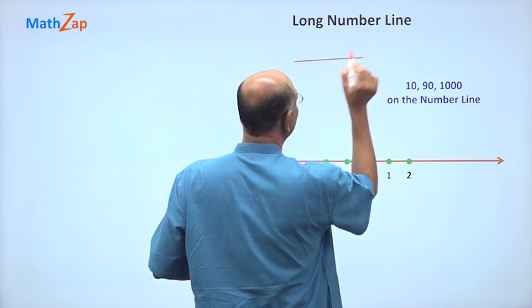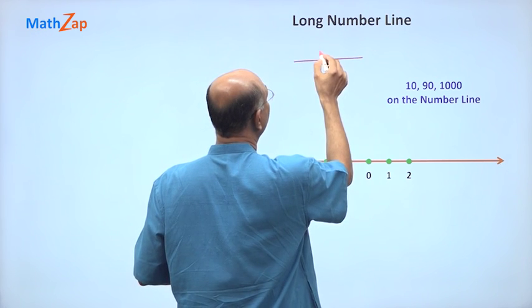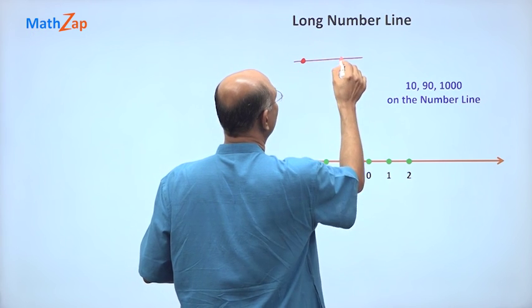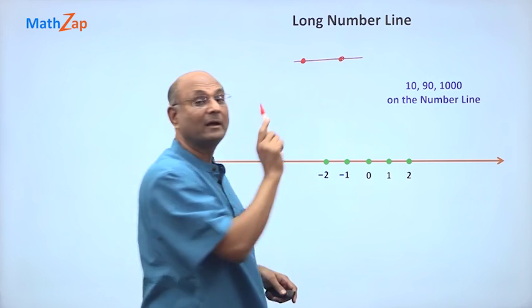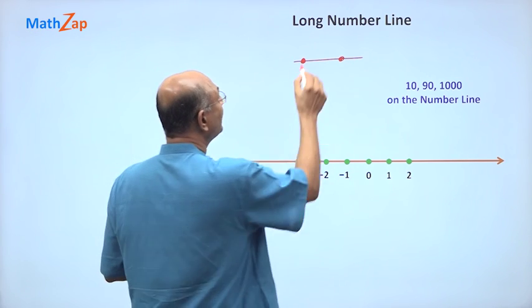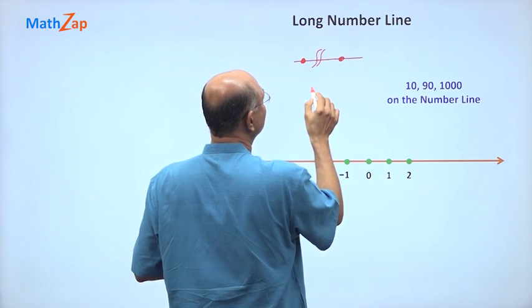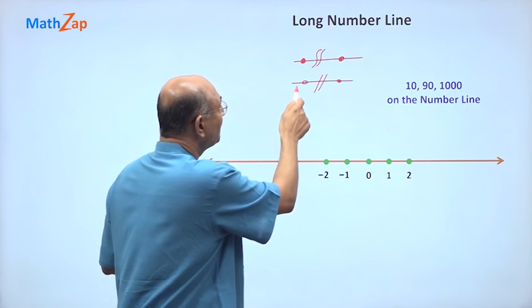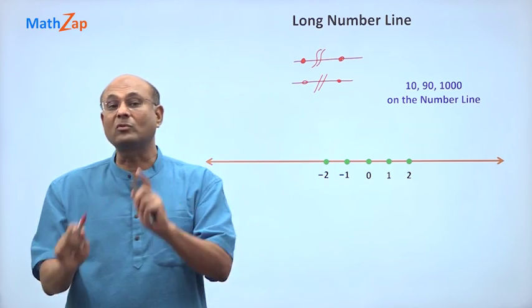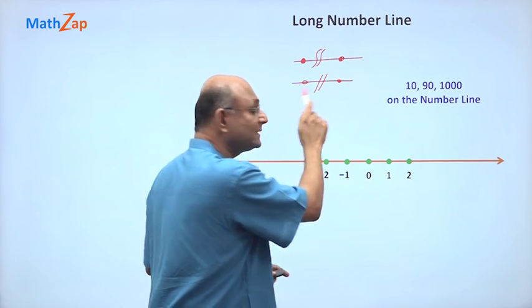What we do is that we take this line and we put a break. So suppose from this point to this point, if I didn't put a break, this means it is a distance of 1. But if I put a break like this or I put a break like this, that means from here to there, I don't know what is the distance.